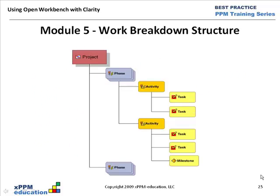Beginning lesson one, we want to look at the concept of the work breakdown structure, which is basically a hierarchical arrangement of the work we're going to do. This graphical image shows what a work breakdown structure looks like — beginning at the project on top, then breaking down into phases, activities, tasks, and milestones. Depending on the methodology you're using, the terminology and number of breakdowns might differ slightly.